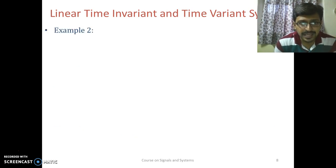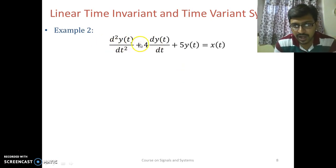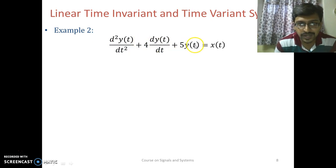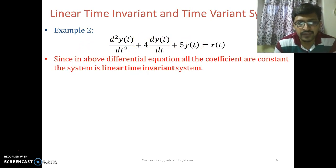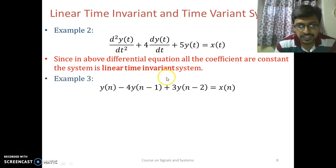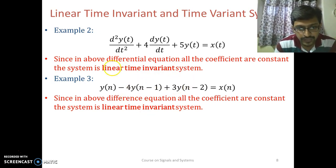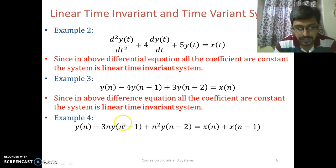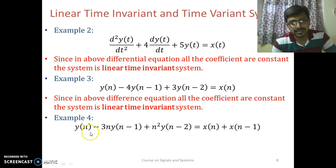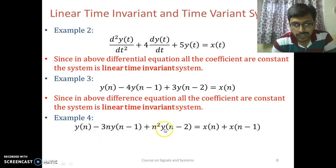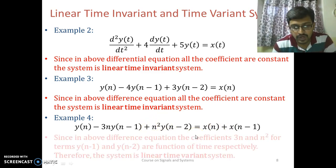Let us take another example. Here we can see that all the coefficients of the differential equation are constant and independent of time, so the system is a linear time invariant system. Now for a discrete time system represented by a difference equation: if coefficients are functions of n (where n represents time), the system is time variant. Here, the coefficients of the difference equation are all constant values, so the system is linear time invariant. Whereas in this example, the coefficients are functions of n, so this system is a linear time variant system.